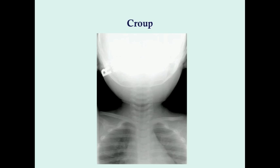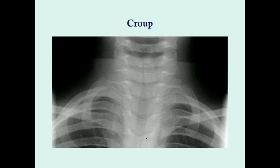This is an example of croup on imaging. You can see the trachea narrows up here — this is the steeple sign, also called the pencil sign because it looks like a pencil with a really long tip. When we look at bacterial tracheitis, you will also have this steeple sign, but with bacterial tracheitis you can often see cloudy exudate along the trachea, and the clinical history will be different as well.